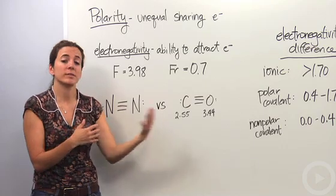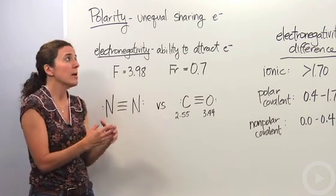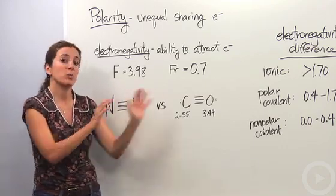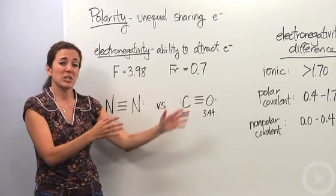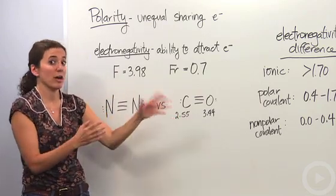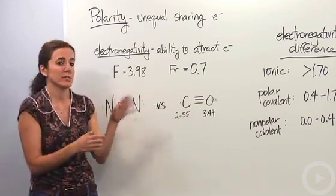When we talk about covalent bonds, they're actually sharing those electrons between them, those valence electrons. But sometimes they're not equal sharing. Sometimes one element is actually going to share those electrons more than the other. They're actually going to be electron hogs versus electron givers.